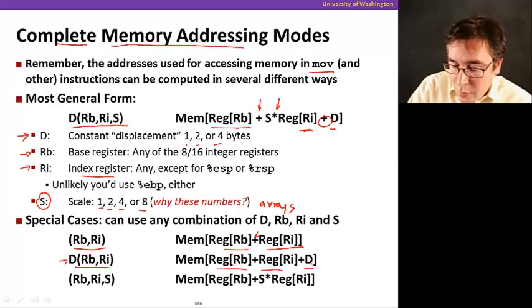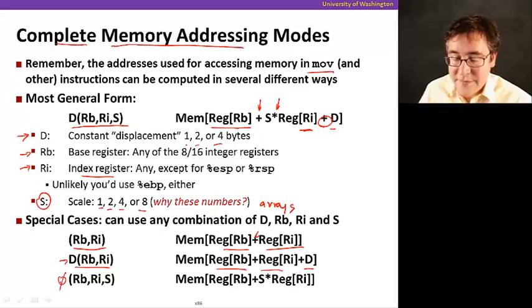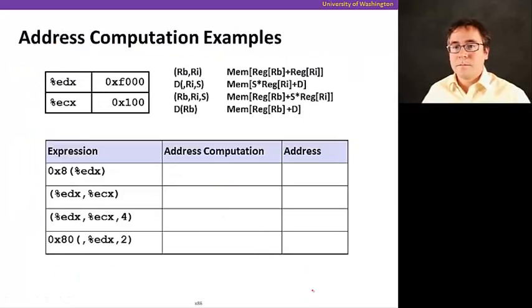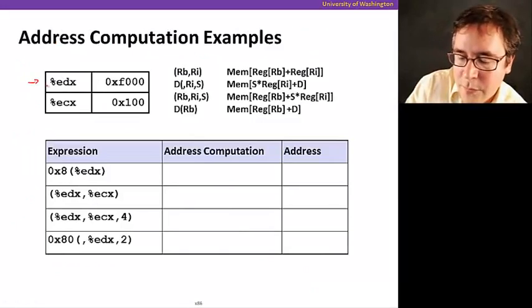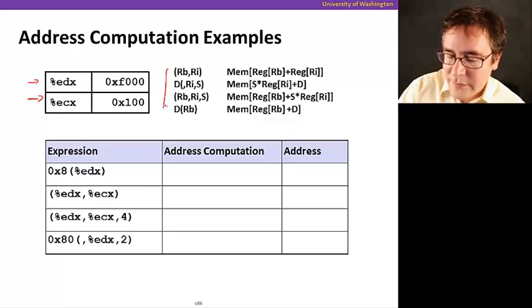And also, you could have no displacement at all. We're not adding anything. So, this displacement is effectively zero. So, it adds RB with the scale multiplied by register RI. So, let's see some quick examples here. We have two ratios in our example, EDX and ECX. EDX is set to F000 hex, and ECX is set to 100.